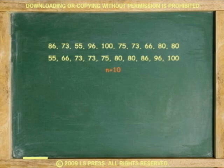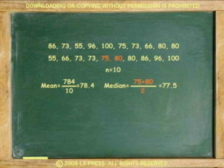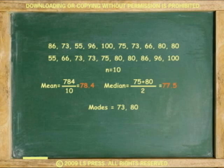The mean is 784 divided by 10 or 78.4. The median is 75 plus 80 divided by 2 or 77.5. There are two modes, 73 and 80. Answer, the mean and median show central tendencies for the data, but the mode does not.